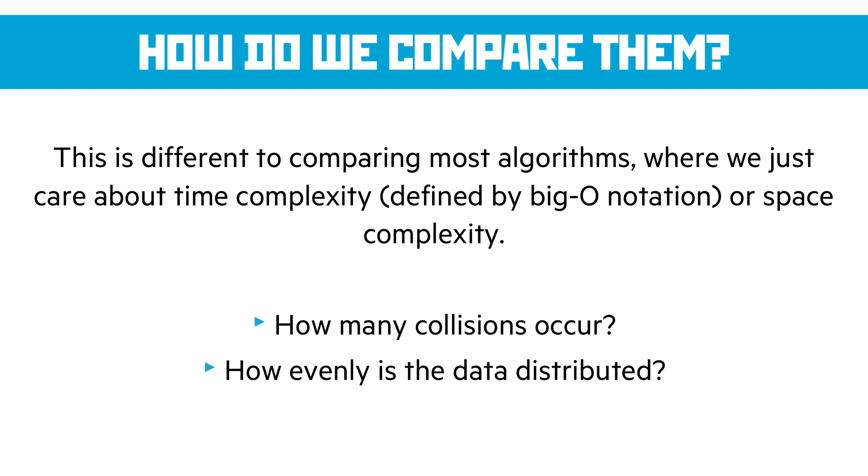But with a hash function, we need to think about how many collisions occur. How often do we try to put data where data already exists? And secondly, is the hash function evenly distributing the data over the amount of physical space we've got? Because if it's not, more collisions will occur and it'll be slower.